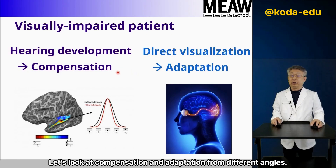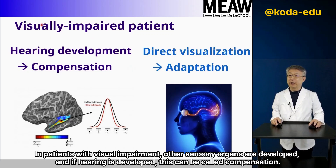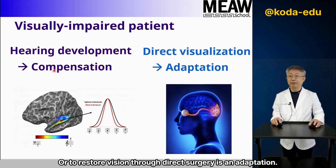Let's look at compensation and adaptation from different angles. In patients with visual impairment, other sensory organs are developed — if hearing is developed, this can be called compensation. Restoring vision through direct surgery is adaptation.